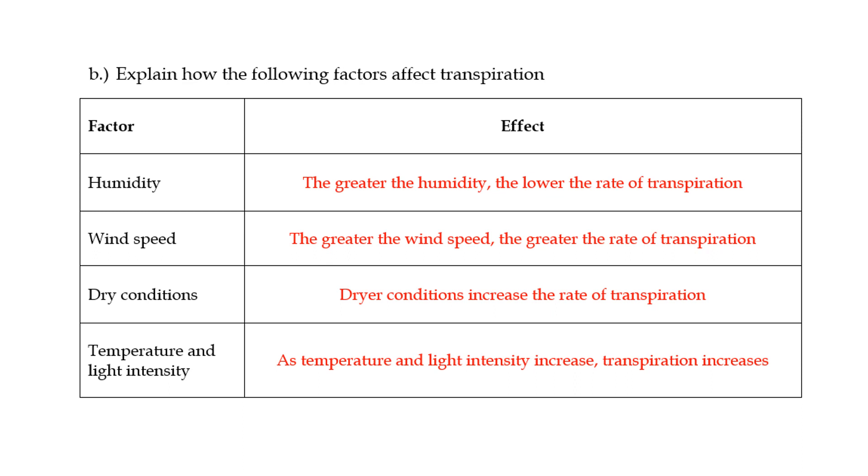And with regards to temperature and light intensity, whenever temperature and light intensity increase, transpiration will increase. And the reason for this is that the stomata on the surface of the leaf are likely to open when temperatures are a bit high, when light intensity is good. So that means that transpiration will increase as well because by nature, the stomata will start to lose water.